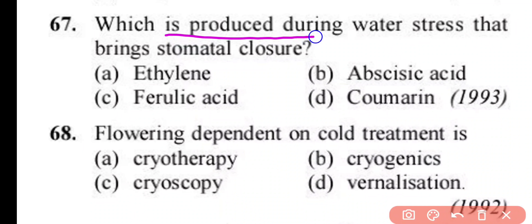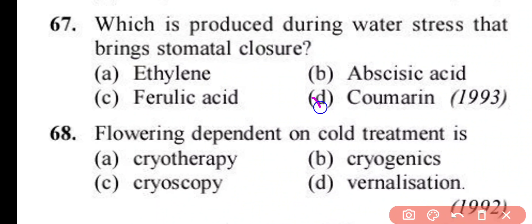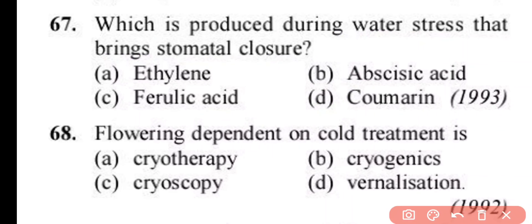Question number 67. Which substance is produced during water stress that brings about stomatal closure? Ethylene, abscisic acid, ferulic acid, or coumarin. Correct answer is option D. Coumarin is a hormone produced during water stress that brings about stomatal closure.